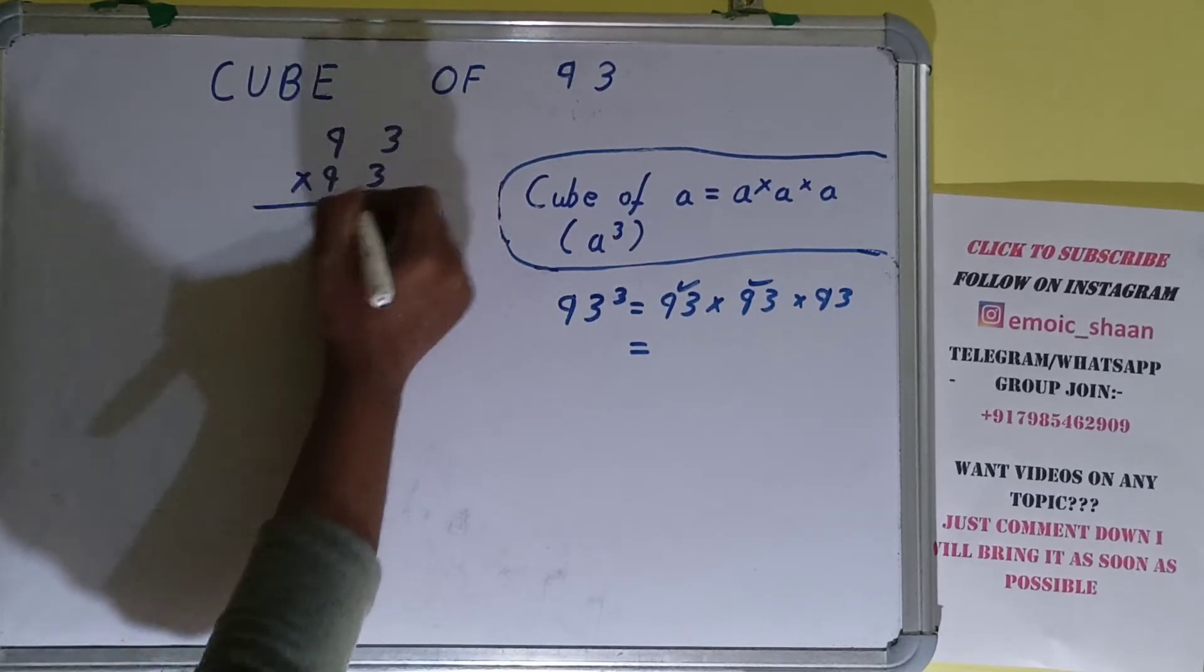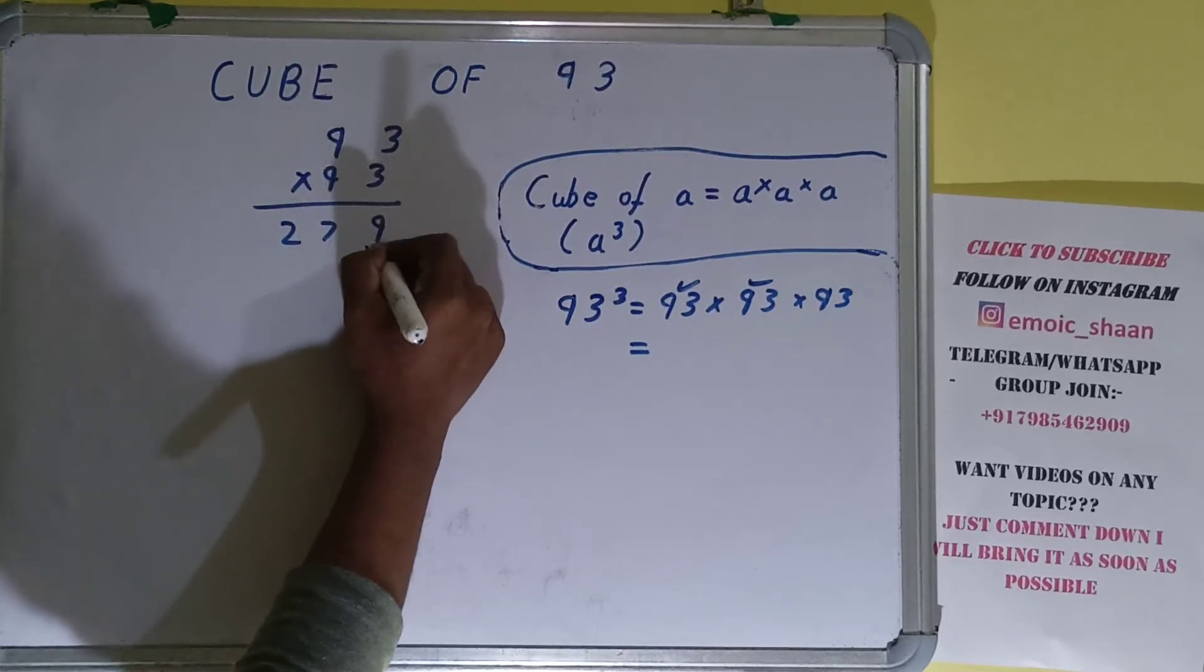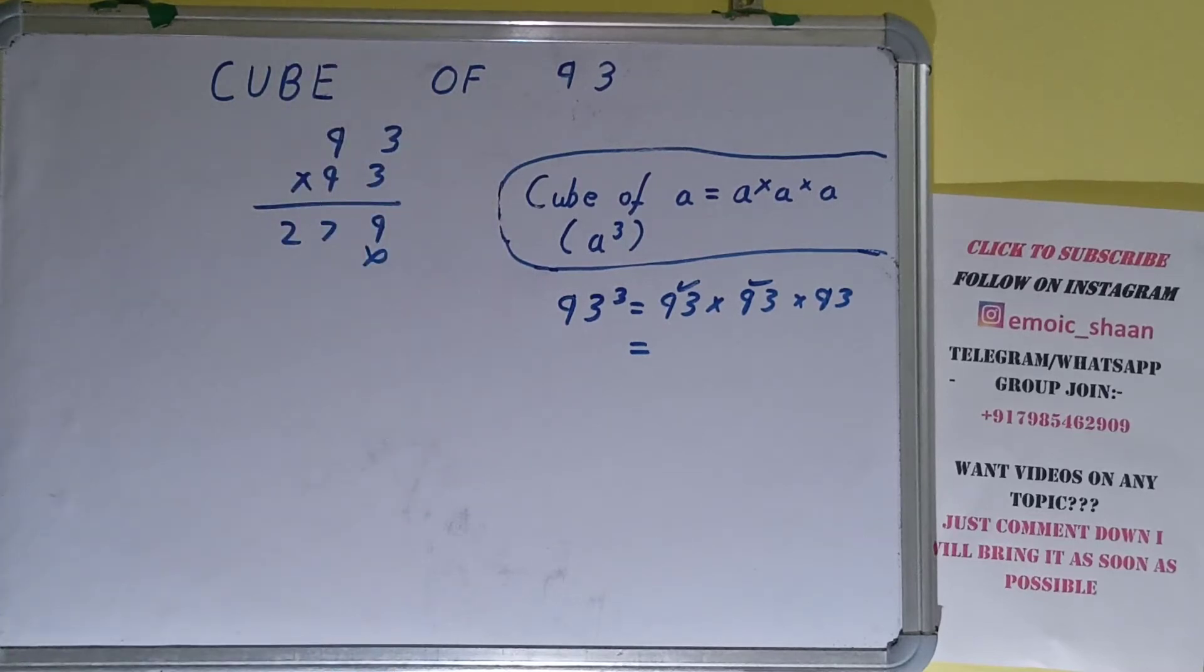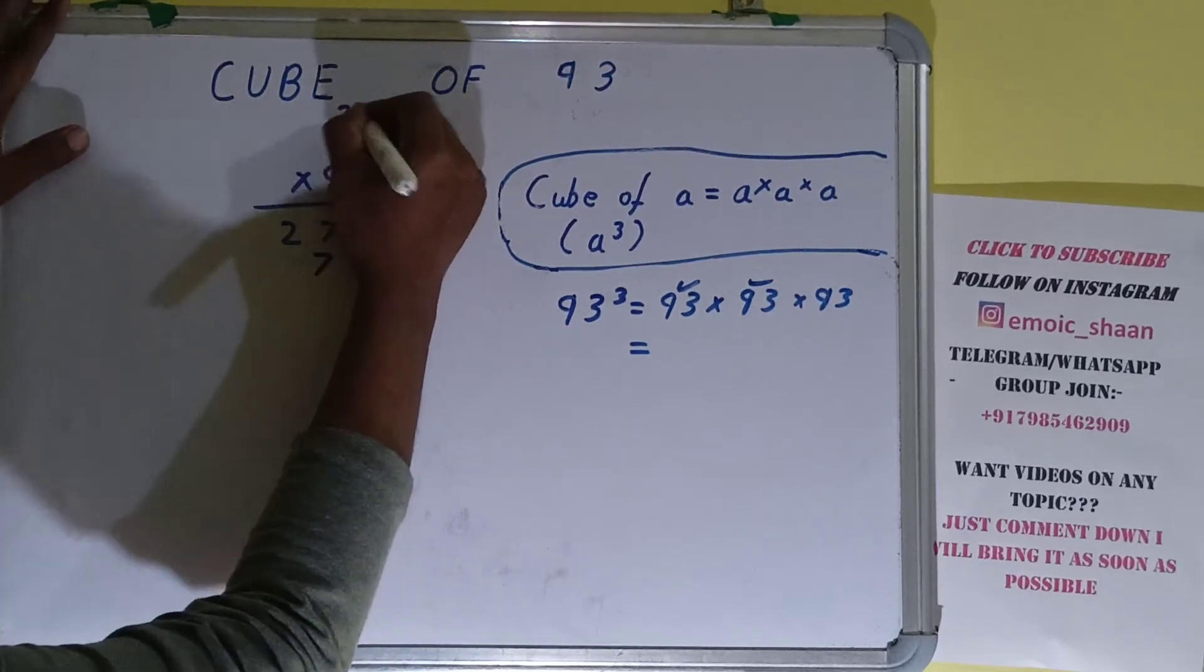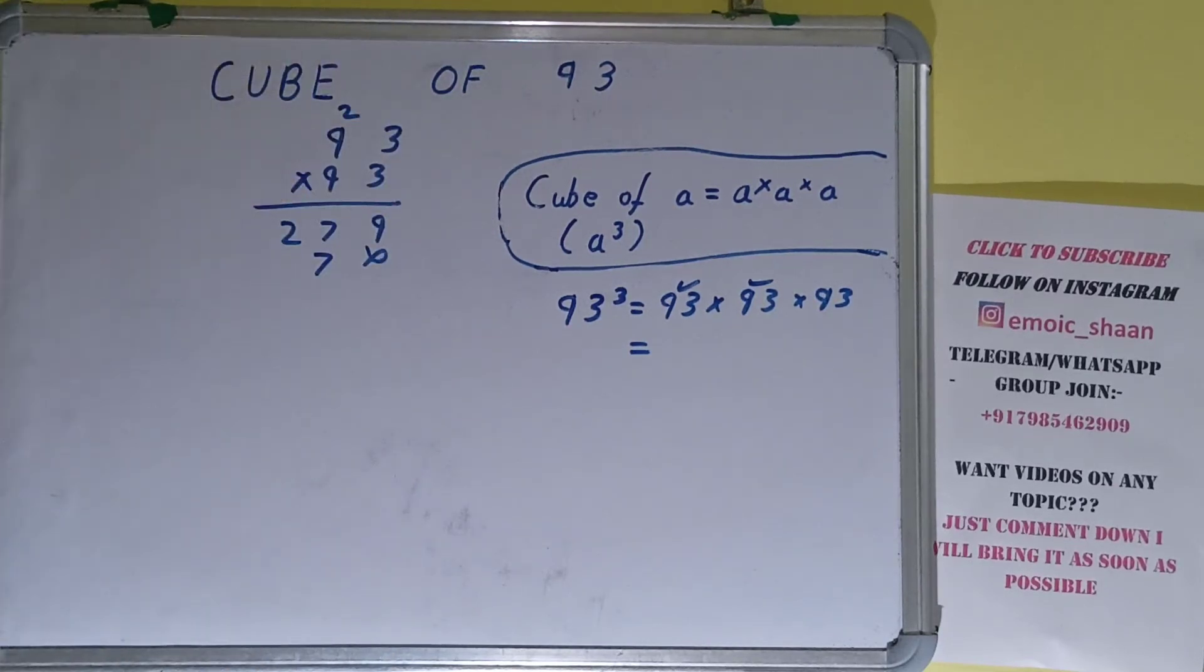3×3 is 9, 9×3 is 27. So we are done with this. Now 9×3 is 27, 2 to carry. 9×9 is 81 plus 2 is 83.